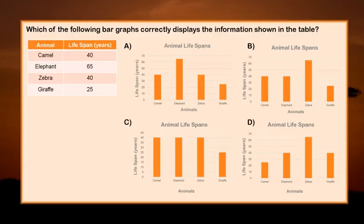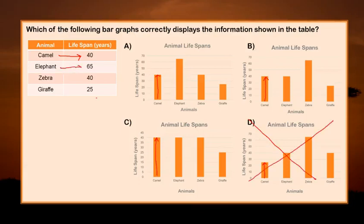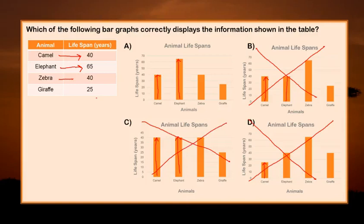Let's look at this example. Which of the following bar graphs correctly displays the information shown in the table? The table says camels have a lifespan of 40 years, so let's start there. Camel on the first graph goes up to 40. The second graph goes up to 40. The third graph goes up to 40. The fourth graph goes up to 25, so D is definitely not the answer. Let's look at elephants — they should be at 65 years. In the first graph, yes, that's 65. The second graph, that's only 40, so it can't be B. And answer choice C is at 40, so it can't be C either. So our answer must be A.